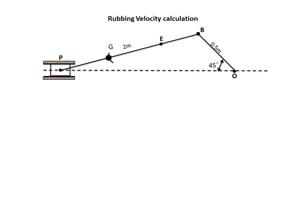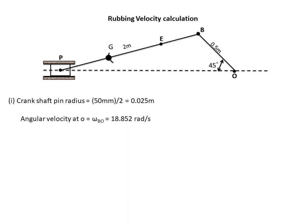The last question is rubbing velocity, which is the easy part. You must understand the direction and sense of rotation of each link. For the crankshaft pin at O: the crank rotates about O, so there is only one angular velocity involved — 18.852 rad/s. The crank pin diameter at O is 50 mm, so the radius is 0.025 m. Rubbing velocity = angular velocity × pin radius = 18.852 × 0.025 = 0.47 m/s.